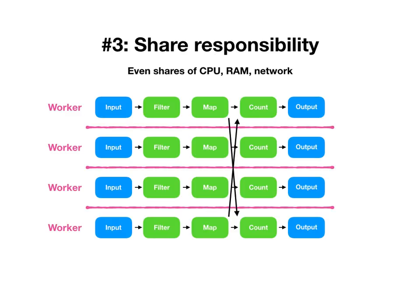Some operators like count are going to require these workers to communicate. If we want to get the correct count for any given string, all copies of that string should probably go to the same worker so it can get a correct total before producing the output. Workers absolutely will need to communicate — we can't avoid that — but this approach of slicing the dataflow graph has a few appealing properties.